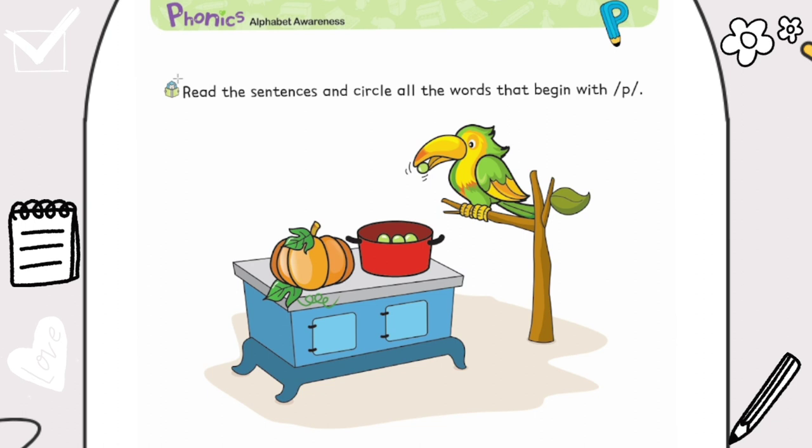Page 64. Letter P. Read the sentences and circle all the words that begin with P. Alright everyone, today we'll learn about letter P. P says P-P-P. P says P-P-P.